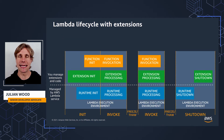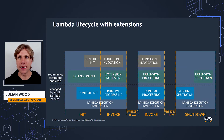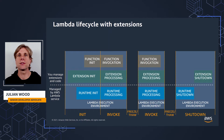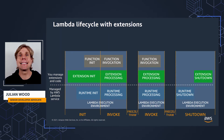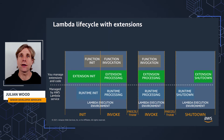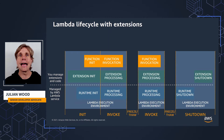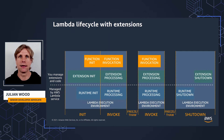Here's the full Lambda lifecycle with Extensions. The timeline runs from left to right and involves three components. First, the runtime, which manages the function invocation and communicates with the Runtime API — the HTTP endpoint within the execution environment that receives invocation events from the Lambda service, forwards them to the function, and returns the function responses back to Lambda. Second, the extension or extensions themselves, which use the Extensions API to register for lifecycle events such as invoke and shutdown, and can also use the Logs API to receive logs directly. Third, the function, which receives invocation events from the runtime, runs your application code for business processing, may talk to external systems, and returns a response back to the runtime, which sends it on to Lambda.